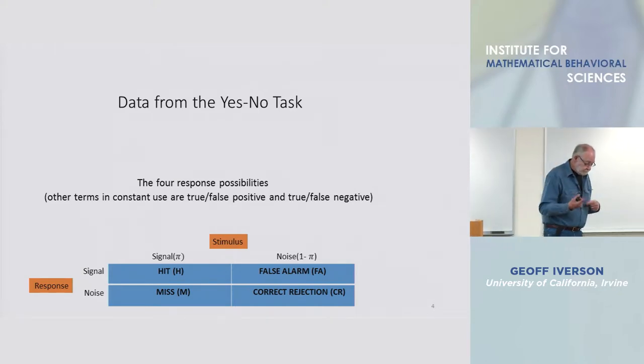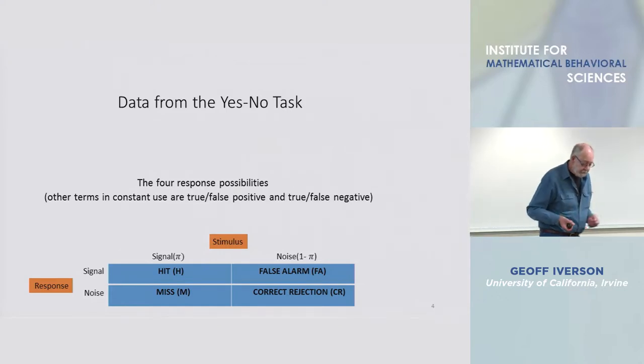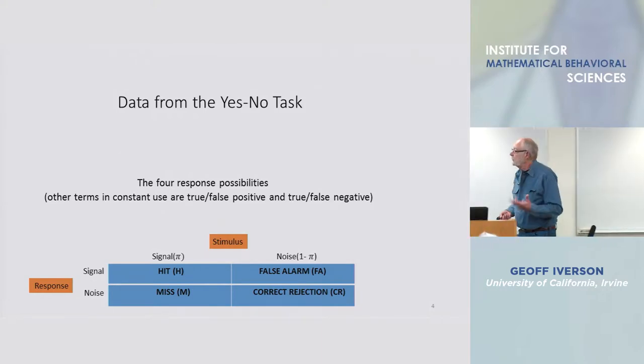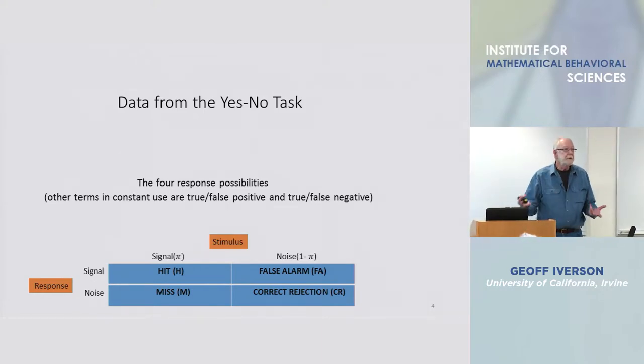There are two kinds of stimuli, old and new, or in this old-fashioned generic terminology, signal and noise.